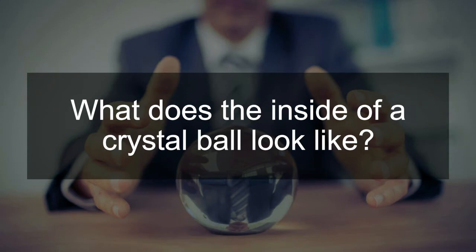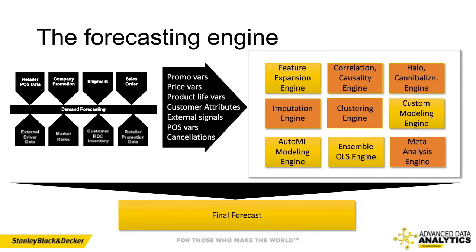Now, the question is what goes into the crystal ball. I'll talk about how these are designed for downstream interpretability and integration with our business teams. The feature expansion engine is about how we create features to address data-related issues like life cycle issues and the different features that impact the prediction itself. The correlation-causality engine takes that feature set and creates a connection between all features and their various lags.